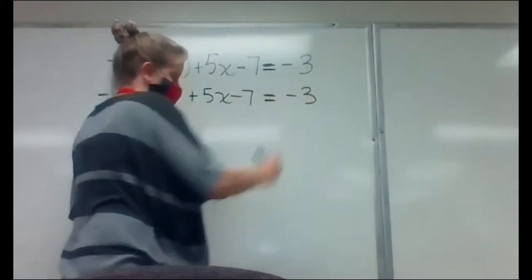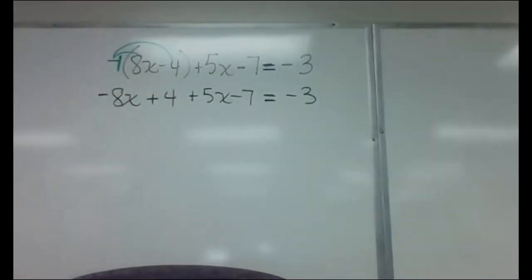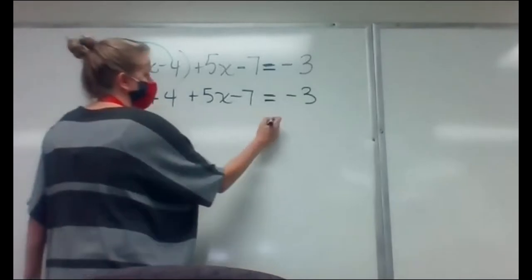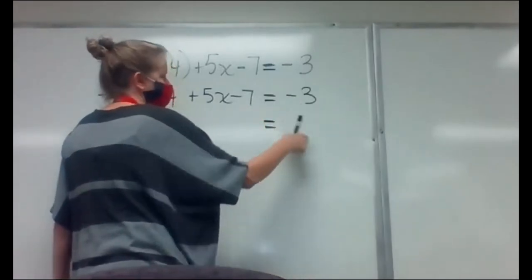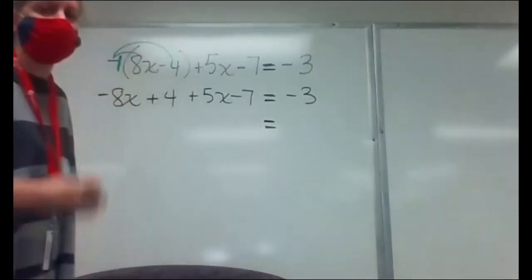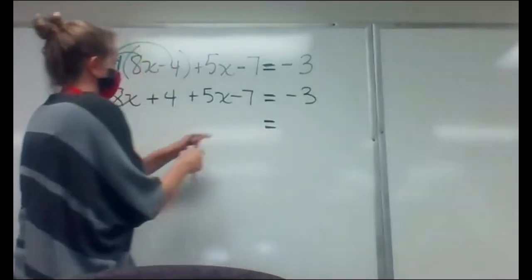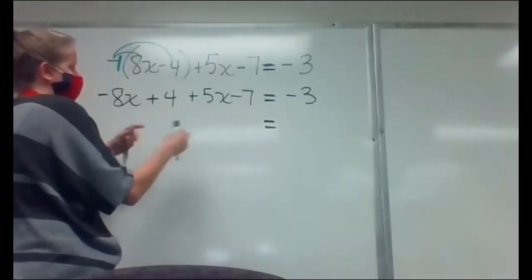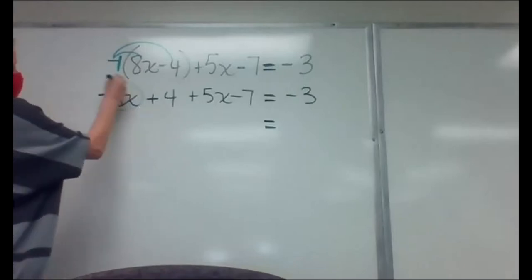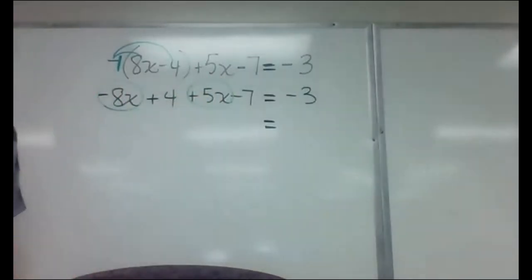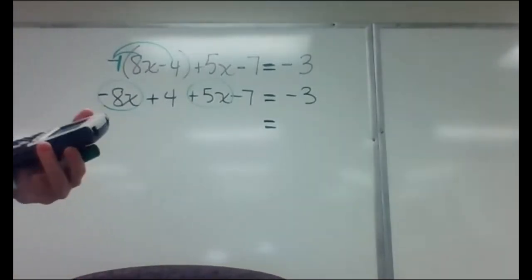That's where the parentheses ends, so I'm not distributing this negative to anything else. The last two terms on this side I just drop down: plus 5x minus 7. Drop down the negative three. Now looking at the left side, I see like terms I can combine. Negative 8x and 5x are both x's on the same side of the equal sign, so I can put them in the same basket.